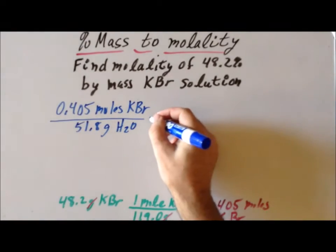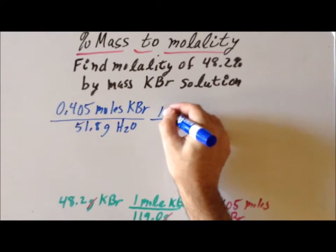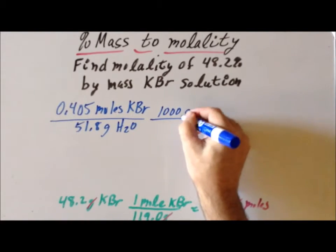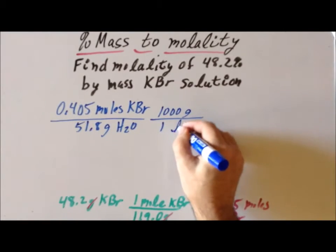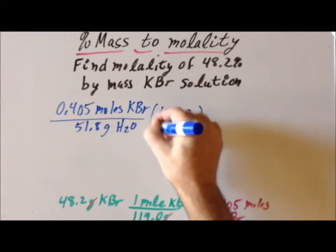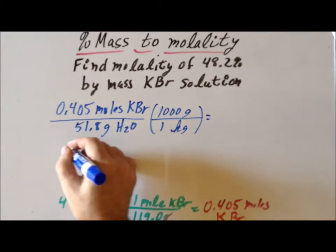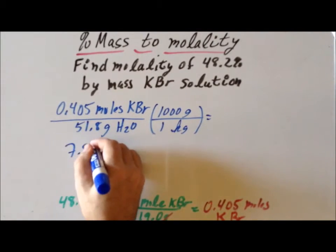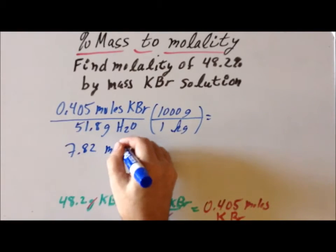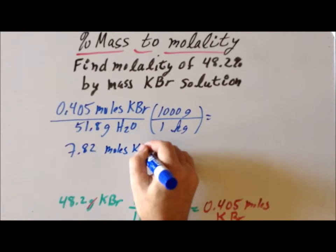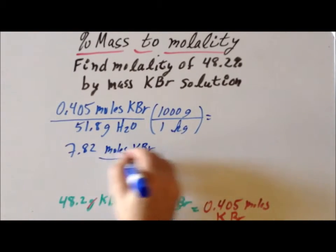To convert to molality, we use our conversion factor of 1,000 grams divided by 1 kilogram. And if we multiply through, we get 7.82 moles of KBR per kilogram of solvent.